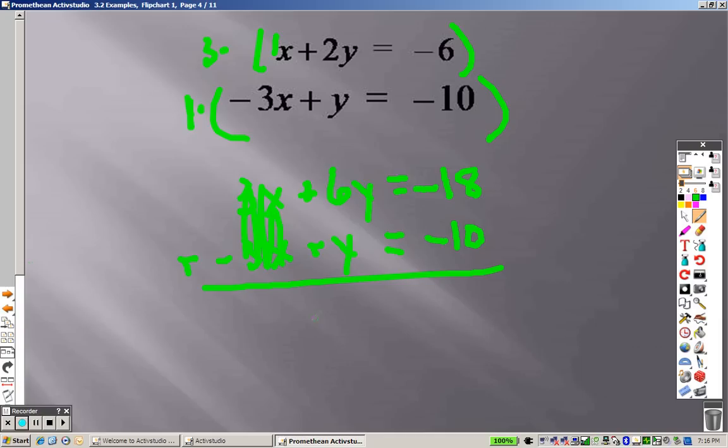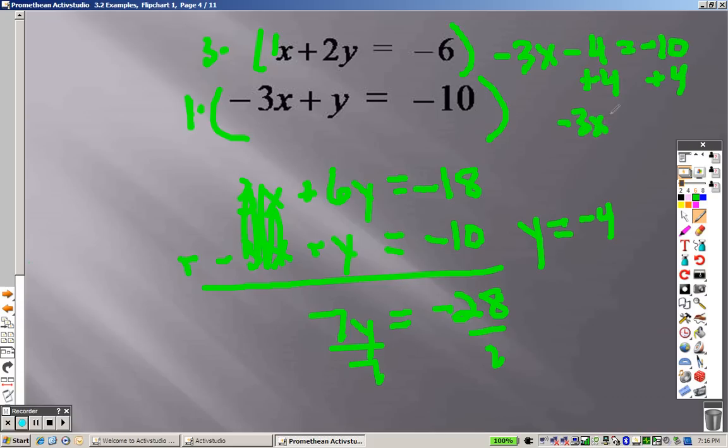The x's cancel out. I end up getting 7y equals negative 28. Divide both sides by 7. y equals negative 4. I'm going to plug it into the bottom. Get negative 3x minus 4 equals negative 10. I add 4 to both sides. I get negative 3x equals negative 6. Divide by negative 3 on both sides. We get x equals 2. So you get 2 negative 4 as your answer to that problem.